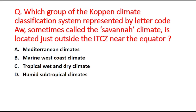Next question: Which group of the Köppen climate classification system represented by letter code capital A and small w, sometimes called the savannah climate, is located just outside the intertropical climate zone near the equator? Option A is Mediterranean climates, B is marine west coast climate, C is tropical wet and dry climate, and D is humid subtropical climates.